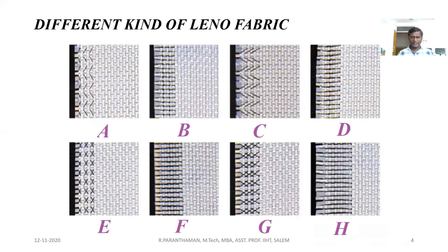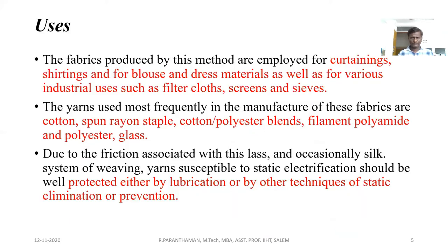These are the different kinds of fabric produced by using Leno structures. Uses: mostly these fabrics are used in curtains, nettings, gauze materials, and dress materials. For industrial purposes: filter cloth, screens, and sieves.